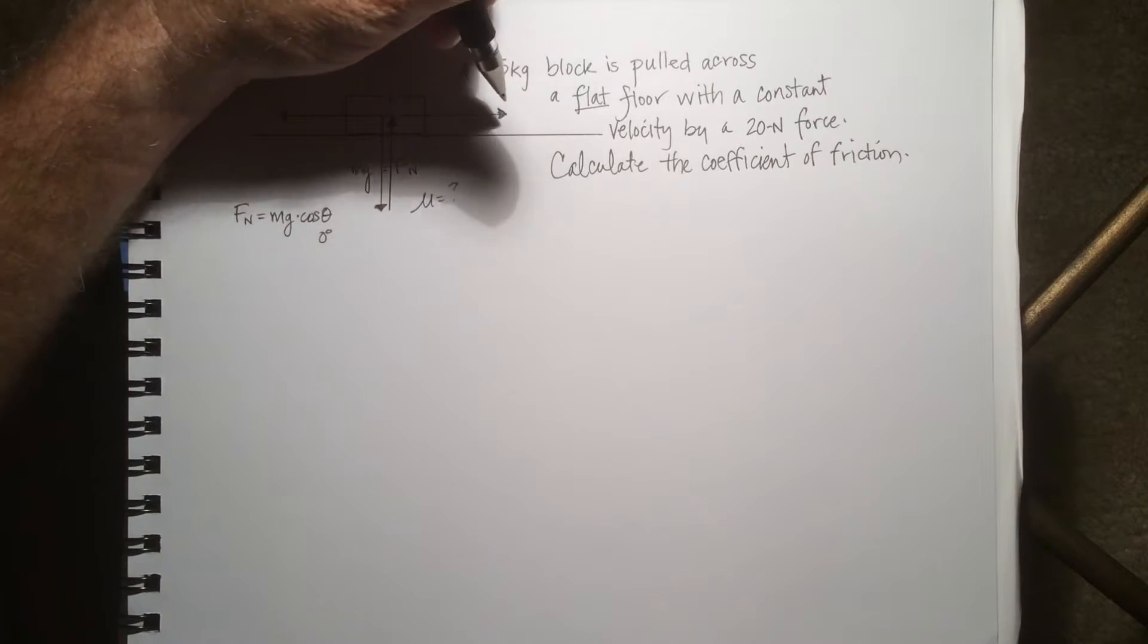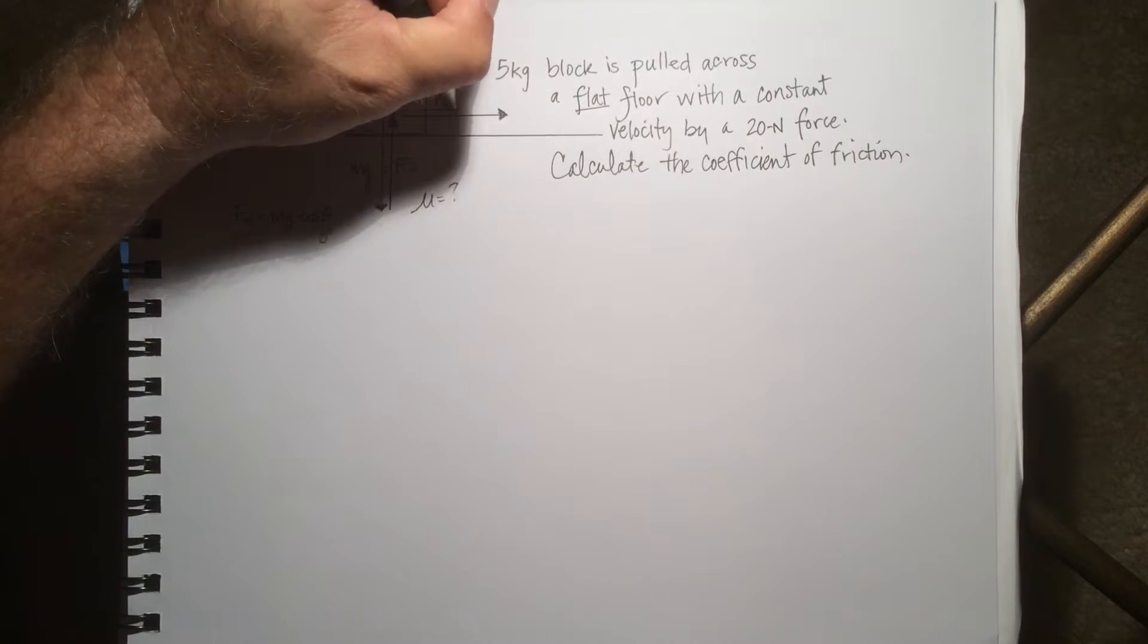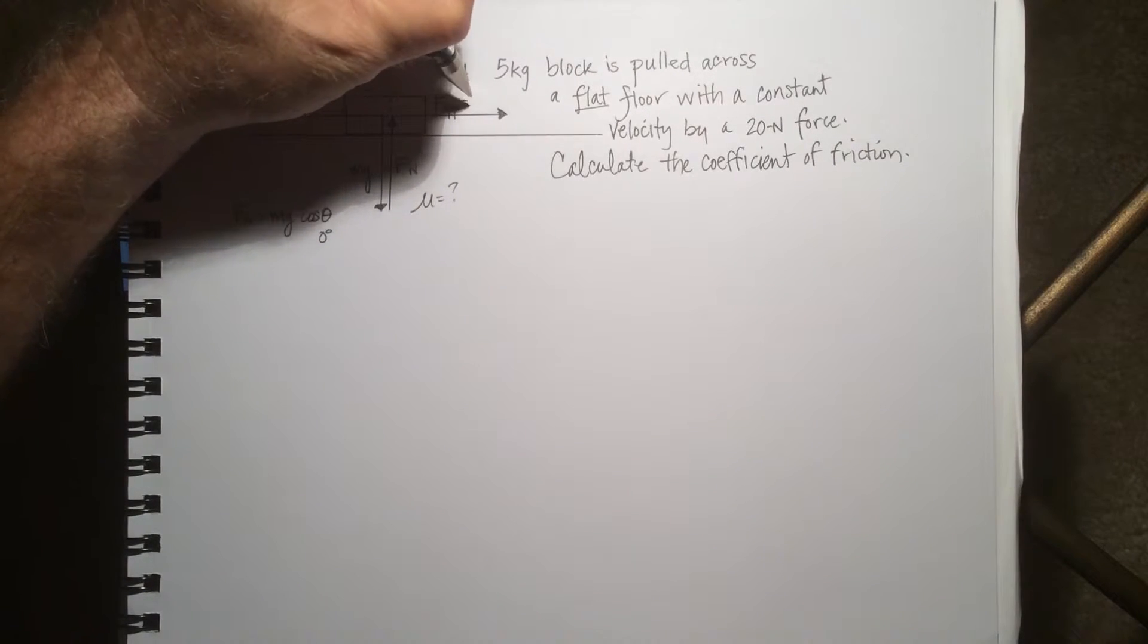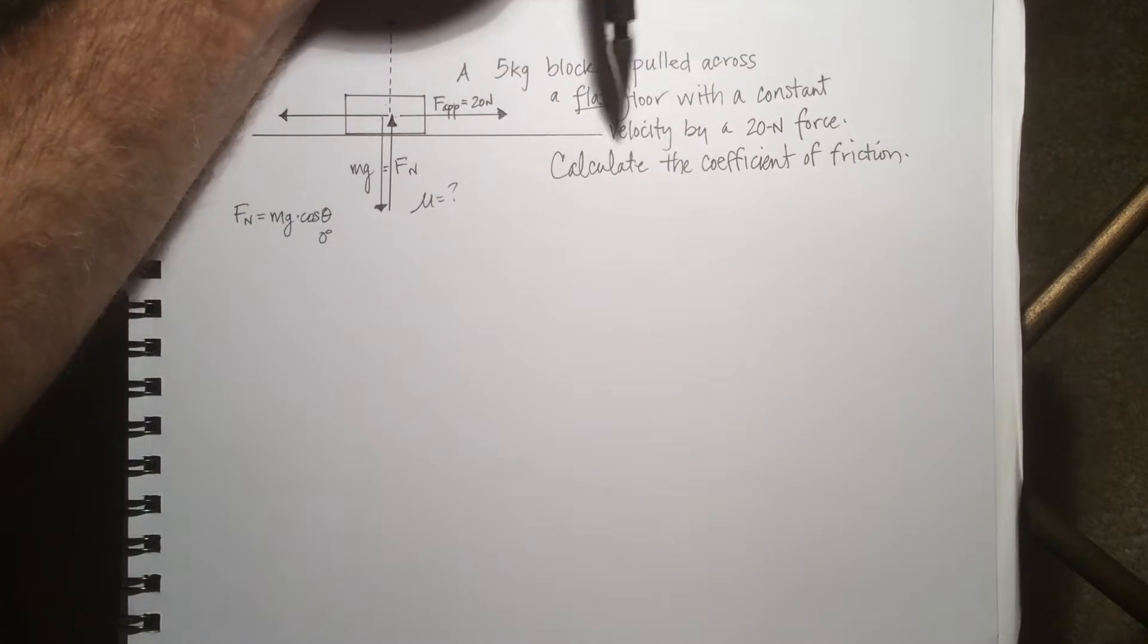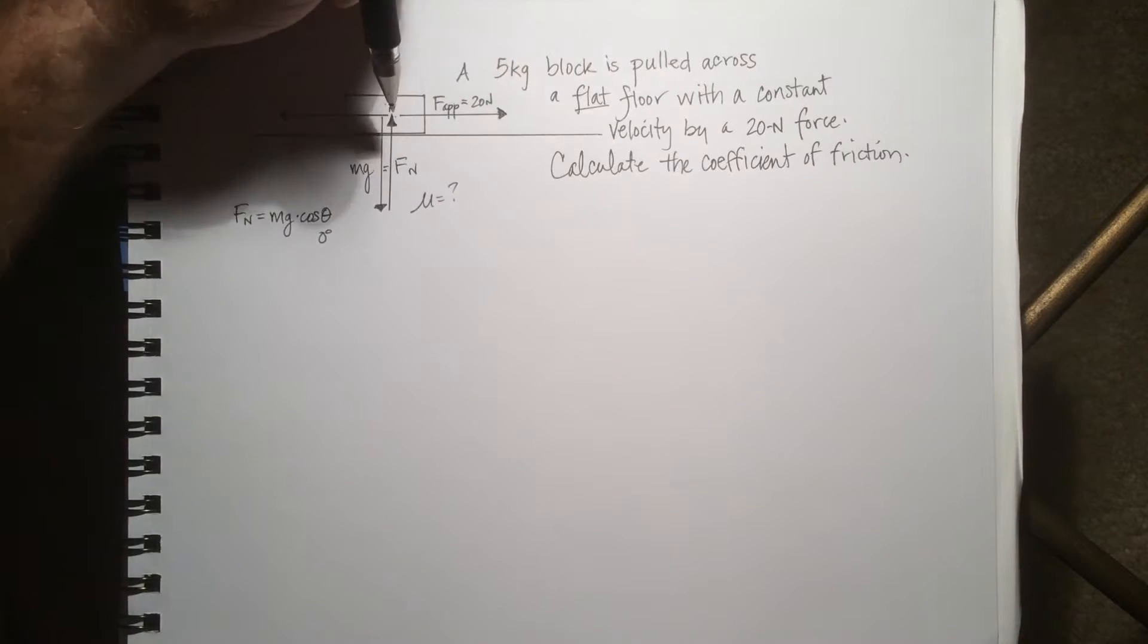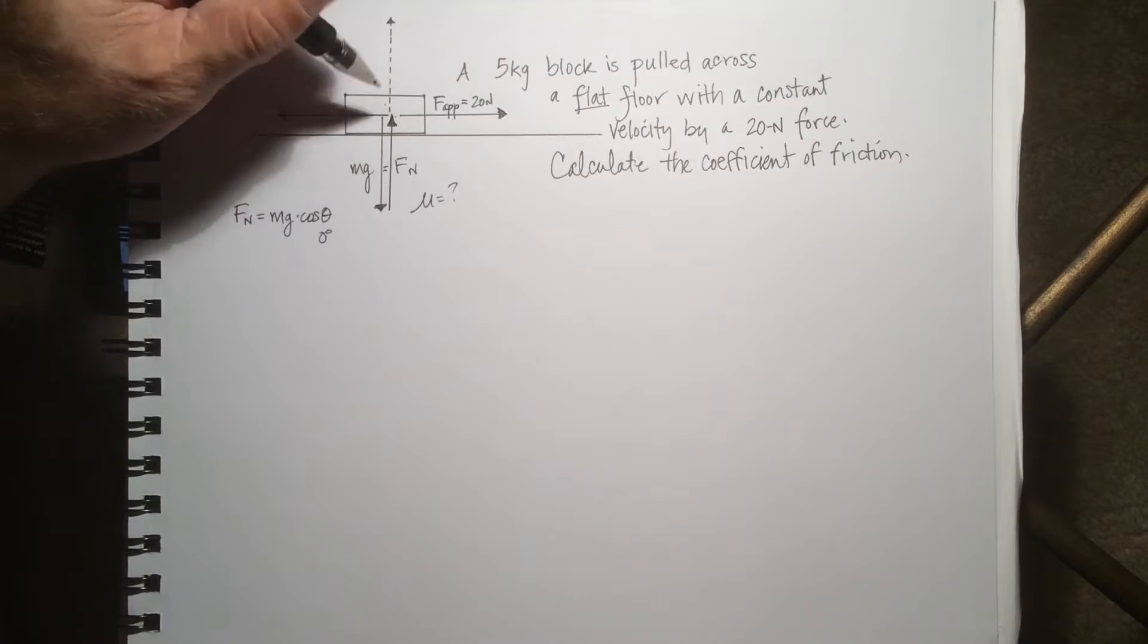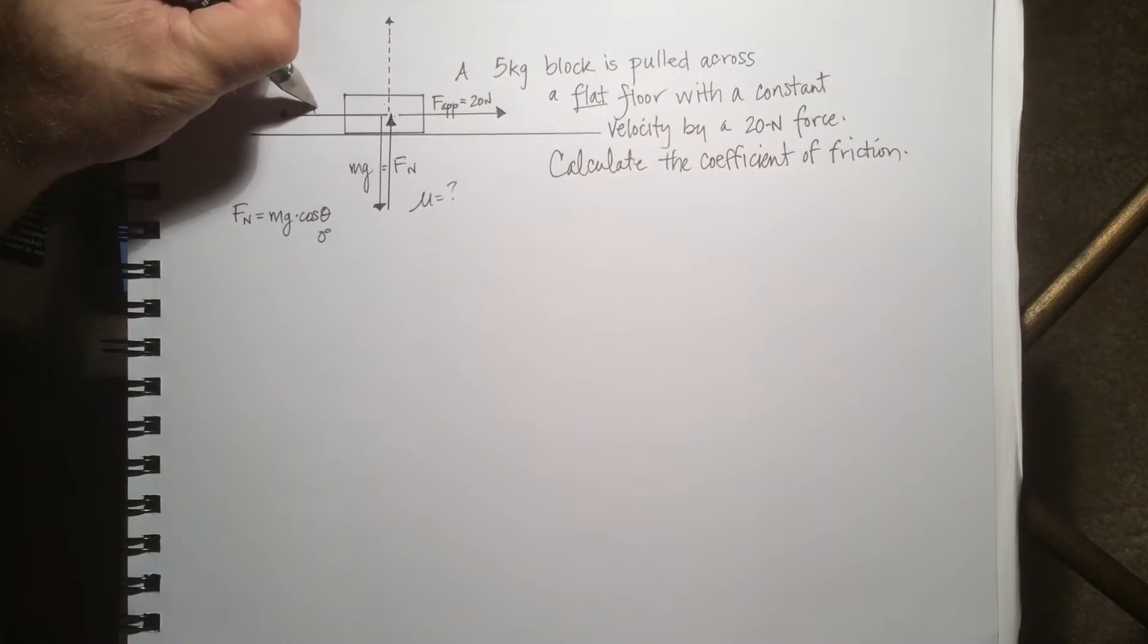If we're assuming a rightward direction, that means our applied force is to the right and that's equal to 20 Newtons. Since it's moving at a constant velocity, the net horizontal force is 0. Force pulling to the right is equal to force pulling to the left. Our applied force is equal to our friction force in the opposite direction.